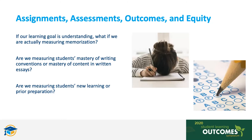We use a variety of assessments to measure student learning outcomes — some formative, some summative, some assignments, some tests. If we are genuinely concerned about construct validity and equity, here are some questions we might ask ourselves. If our learning goal is understanding, what if we are actually just measuring memorization? Are we measuring students' mastery of writing conventions in written essays, or mastery of the content they're actually writing about? Sometimes it's important to do both, but we need to be clear about which one and why. And finally, are we measuring students' new learning or prior preparation?